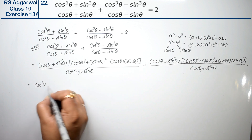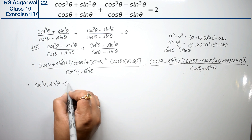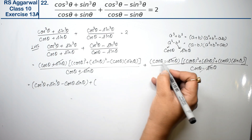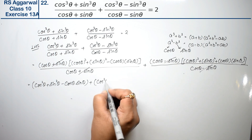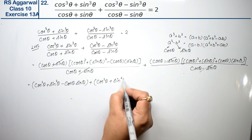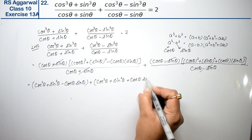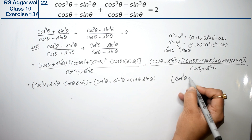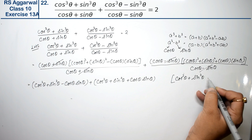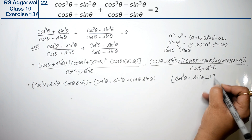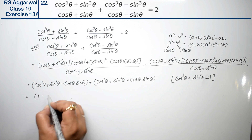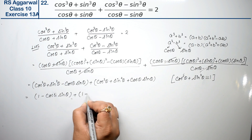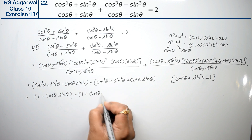We have: cos²θ + sin²θ - cosθ·sinθ + cos²θ + sin²θ + cosθ·sinθ. Now, cos²θ + sin²θ = 1, so we write: 1 - cosθ·sinθ + 1 + cosθ·sinθ.